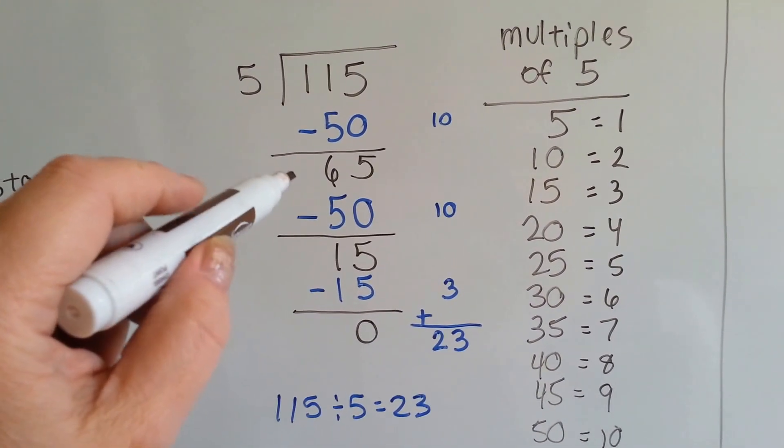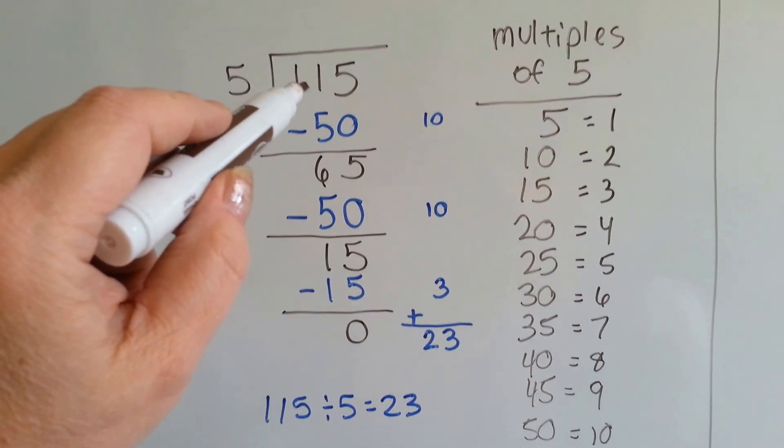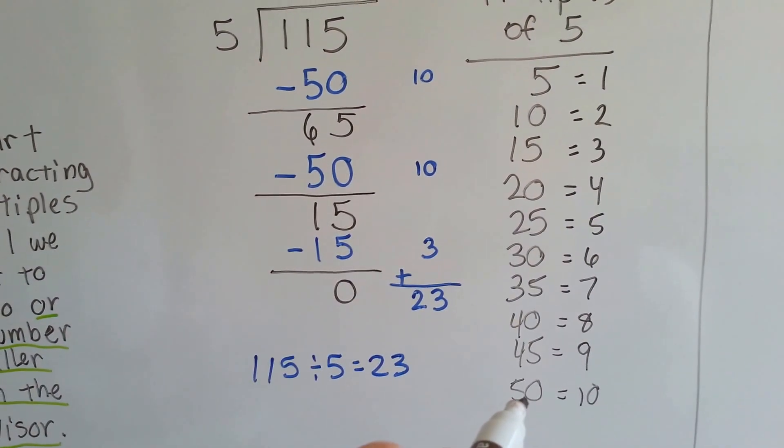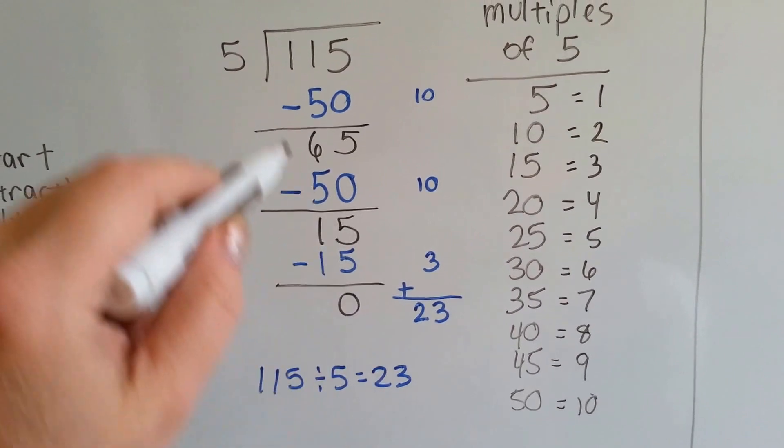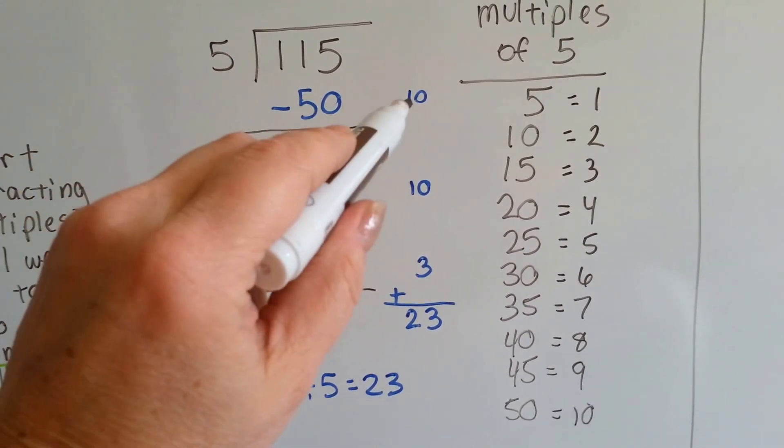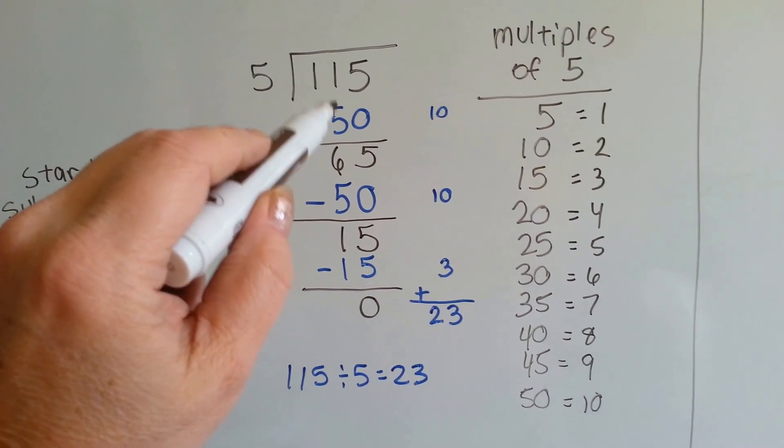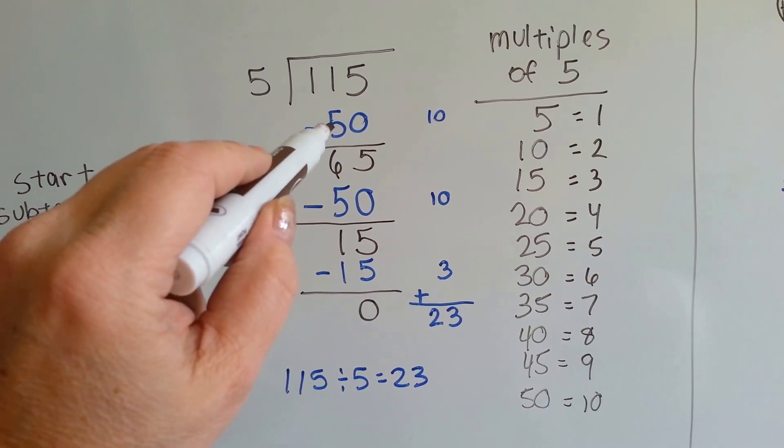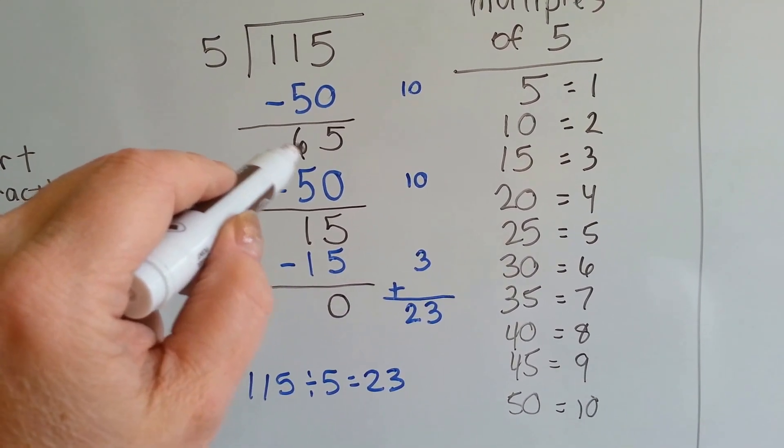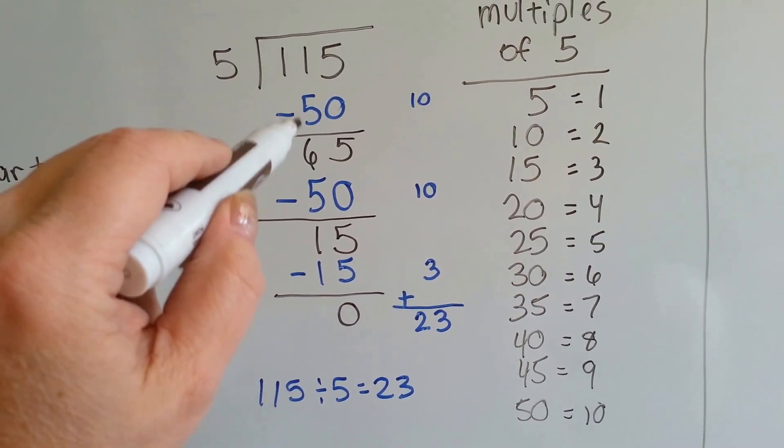So, we're going to start subtracting multiples. We've got 115. Let's subtract 50. That's 5 times 10, okay? So, that's 10 fives that we've taken away. 115 minus 50 gets us 65. See? We dropped the 5 and 11 take away 5 is 6.